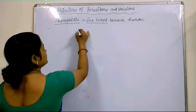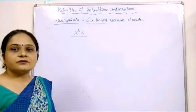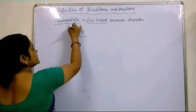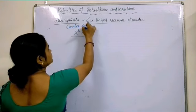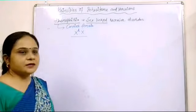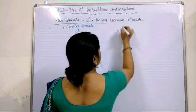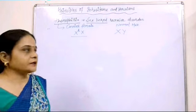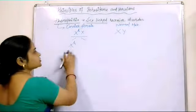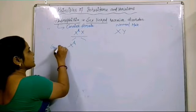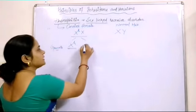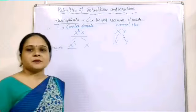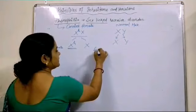First of all, we take this situation: the female is a carrier for hemophilia but does not have any symptoms — we call her a carrier female. Her husband is a normal male. If both of them get married, they will produce one type of progeny. The carrier female produces gametes: one with the recessive gene X-H and one normal X. The normal male produces two different types of sperm — X and Y — and all these sperms are normal.